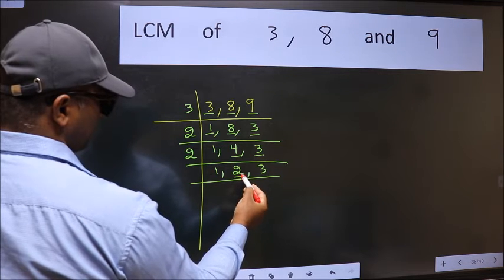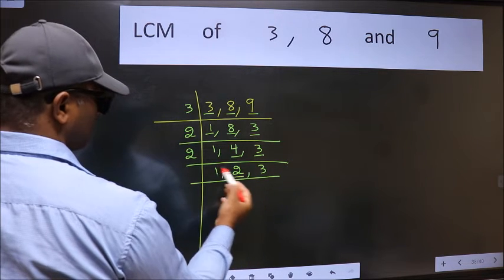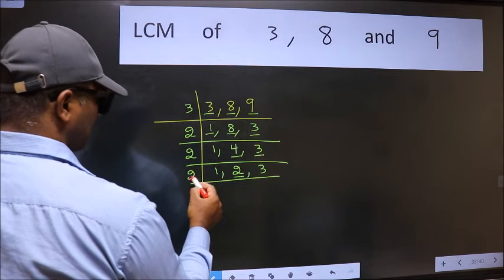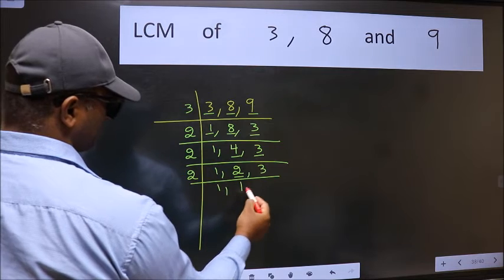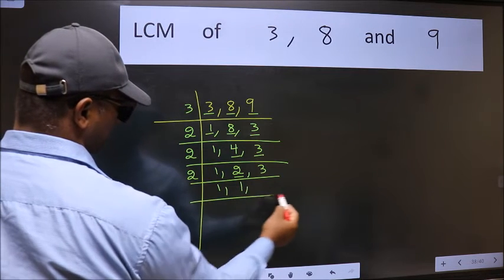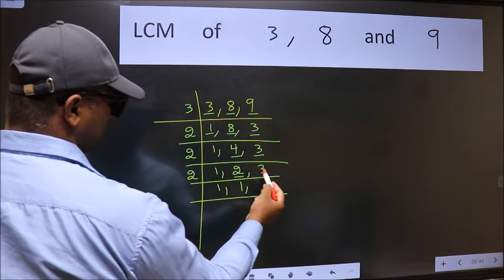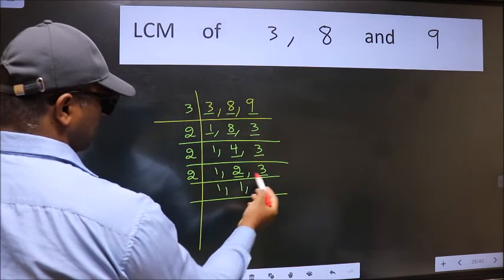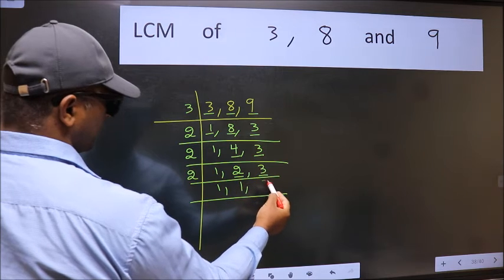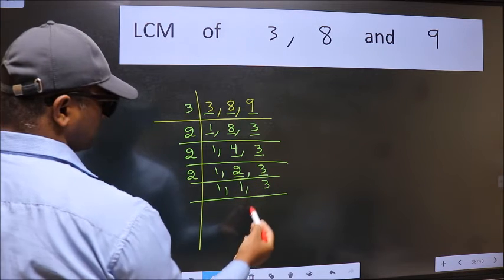Now we have 2. 2 is a prime number, so 2 times 1 is 2. The other number 3 is not divisible by 2, so we write it down as it is.